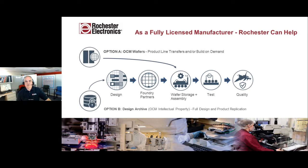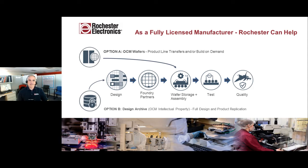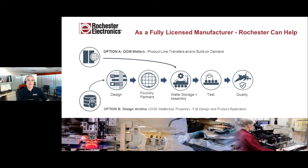Take a great example — an Intel processor or an NXP processor for which we're authorized. We get the original test program from them. It is a culmination of every test escape that has ever come out against that product, wrapped up into one test program that tests everything way beyond the limits of a data sheet. It's meant to filter out everything that could possibly be wrong that ever was wrong with the product. So be careful when you talk about testing — there are different grades of test. What Rochester is doing is authorized testing where we get the test program from the original manufacturer, many times on the original test platform as well.